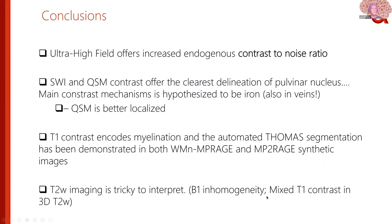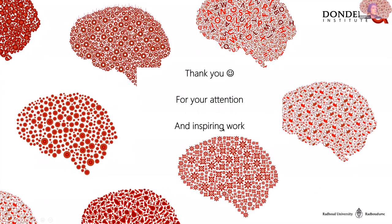T2-weighted imaging is really tricky to interpret at 7T because B1 inhomogeneity starts mixing T1 contrast into the images, and you no longer know whether you are seeing myelination-driven T1 contrast or iron concentration from T2-weighted processes. I'd like to thank you for your attention and for your inspiring work, and thank those who allowed me to put this presentation together.